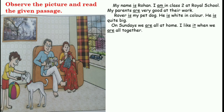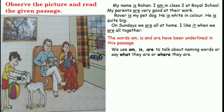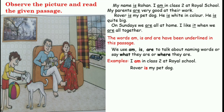Now children, you will have noticed that the words am, is and are have been underlined in this passage. We use am, is, are to talk about naming words or to say what they are or where they are. For example: I am in class 2 at Royal School. Rover is my pet dog. My parents are very good at their work. Now you can see children, am, is and are are highlighted in red colour.